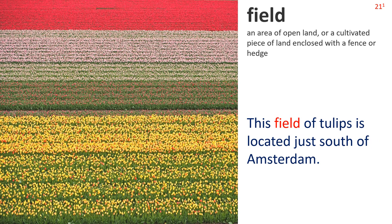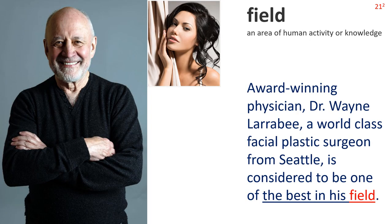Field — Definition 1: an area of open land or a cultivated piece of land enclosed with a fence or hedge. This field of tulips is located just south of Amsterdam. Definition 2: an area of human activity or knowledge. Award-winning physician Dr. Wayne Larrabee, a world-class facial plastic surgeon from Seattle, is considered to be one of the best in his field.